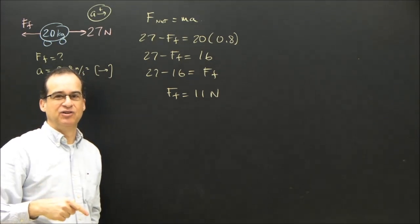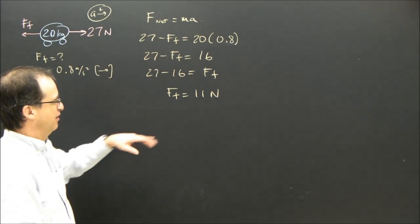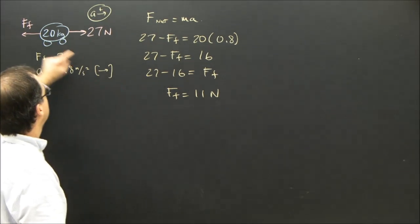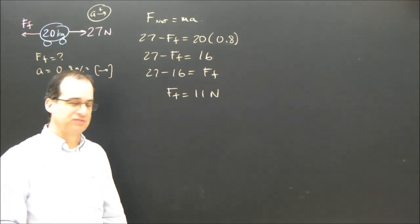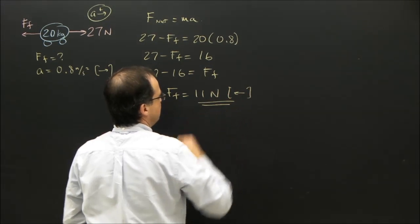But which way is that 11 newtons? Because we have to give a direction. It didn't come out negative to tell us to the left. It came out positive, which is what I expected. Because I already said it was to the left, and it's a linear equation. So the force of friction is to the left.